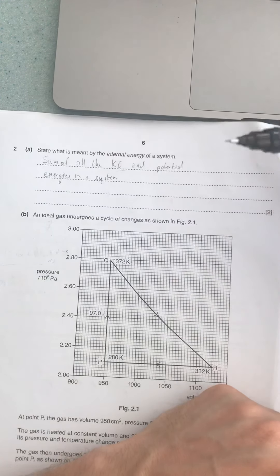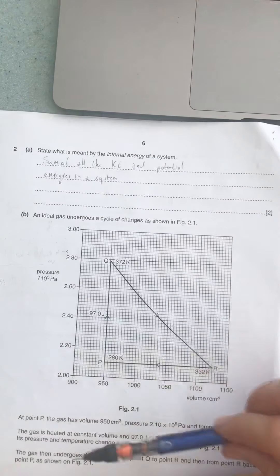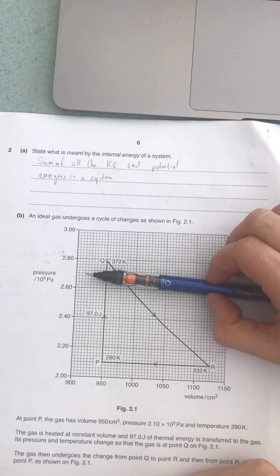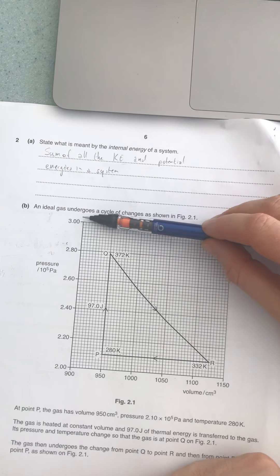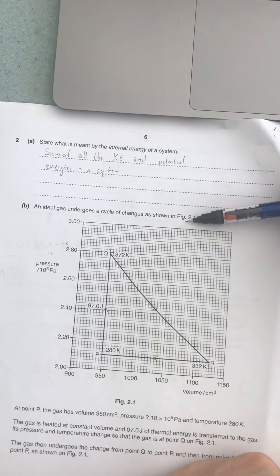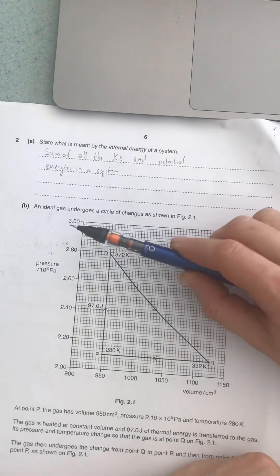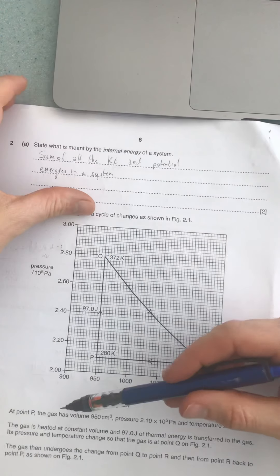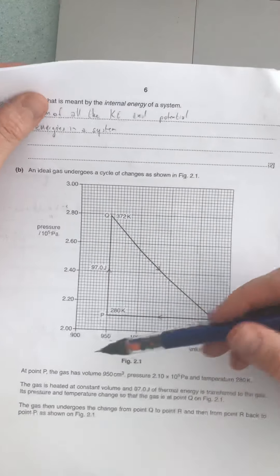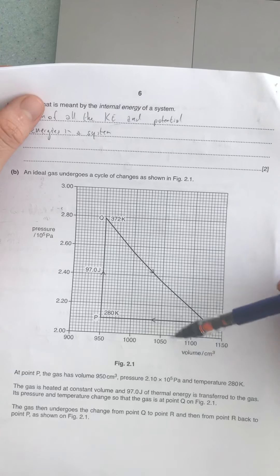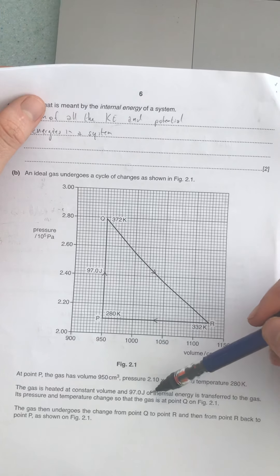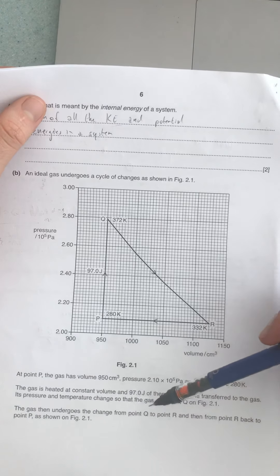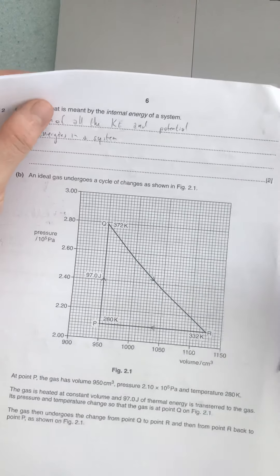One thing you'll notice about these questions is that one part usually flows into the others, so the answer you get from this will help you think about subsequent parts. We've got a gas that undergoes a cycle of changes as shown in Figure 2.1. We've got pressure on the y-axis and volume in cubic centimeters across the x-axis. It tells us the gas is heated at constant volume and 97 joules of thermal energy is transferred to it, and its pressure and temperature change.